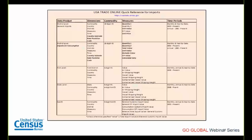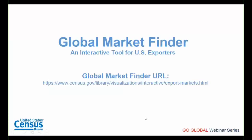The Global Market Finder is the newest international trade tool on census.gov, released in beta in November 2018 after several years of development. It was created to provide companies with a simple tool for identifying new export markets. Unlike USA Trade Online, it does not require an account or password and doesn't involve creating a report — it's very easy to access and navigate. As a beta version, it may be slow or crash under heavy use, and the team welcomes positive or negative feedback.